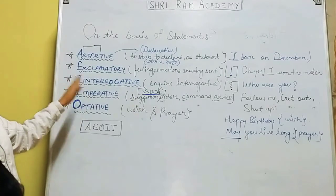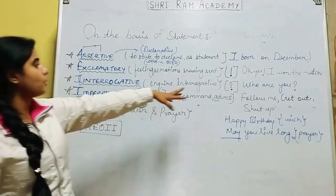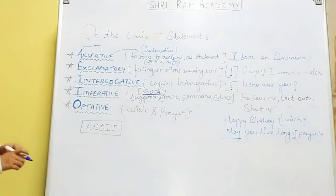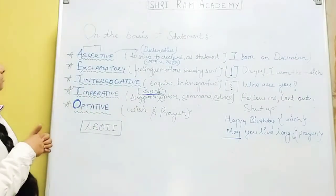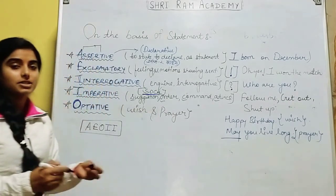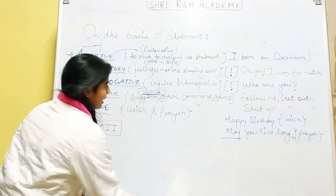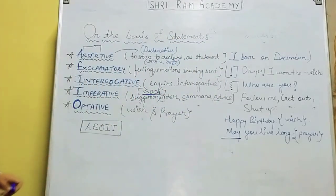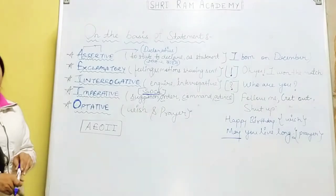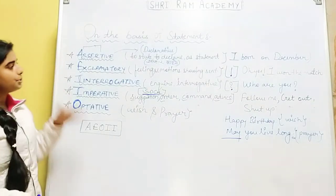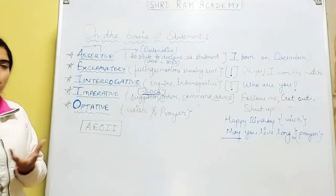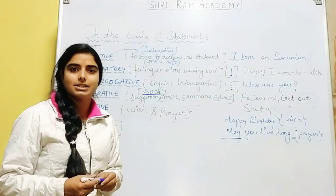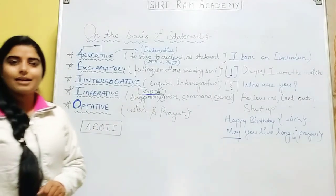So to summarize: optative में wish and prayer; imperative में suggestion, order, command; interrogative में question mark; exclamatory में exclamation mark; assertive में statement — whenever there is a statement in a sentence. This was the simplified way to learn sentences on the basis of statement. आप PDF से notes भी बनाओ students, और अपनी grammar copy में भी यह simplified notes बनाओ — it will be quite easy for you to revise. Hope you enjoyed the session. Good luck, work harder, stay blessed.